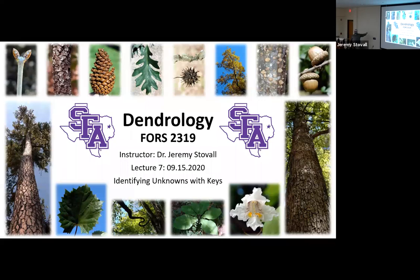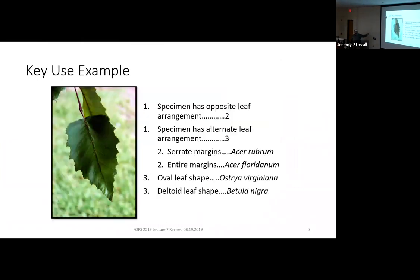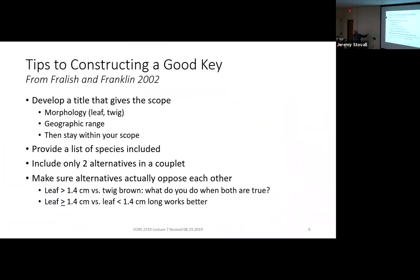These are the slides we already looked at for lecture seven, back before we started using dichotomous keys. What I wanted to do is just look through a few guidelines on these keys. You've got experience using them, so that'll help you see what works and what doesn't. You know it's frustrating when you turn to a couplet in a book and it's only talking about the fruit, you don't have any fruit, and it's not helpful. So you've seen some things that are less than helpful.